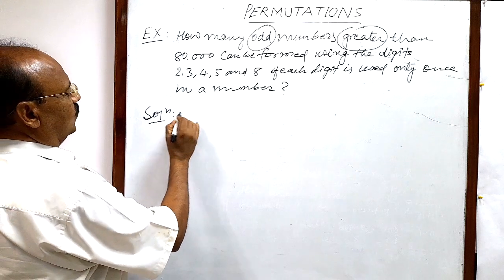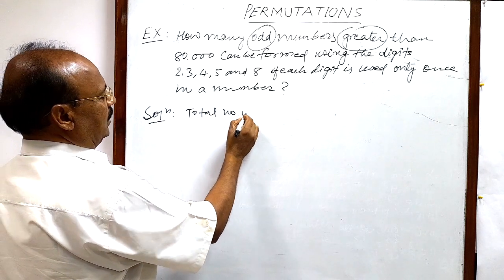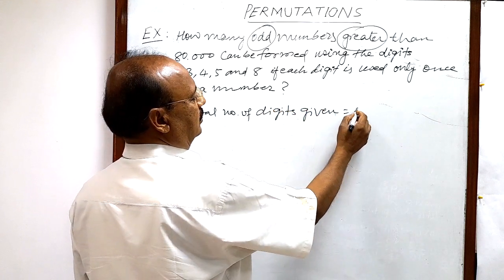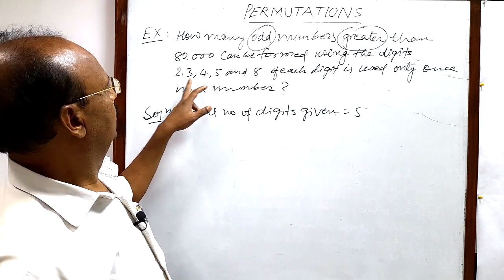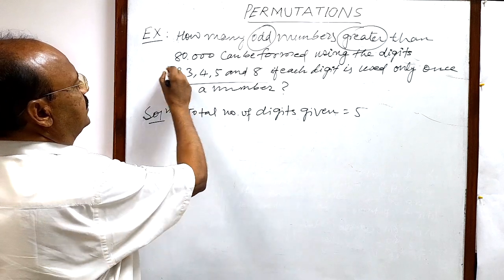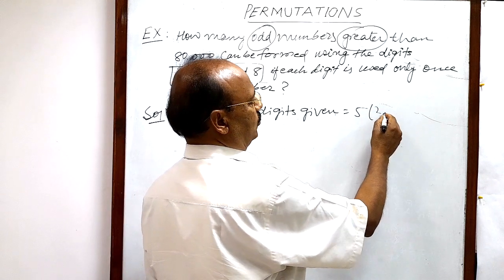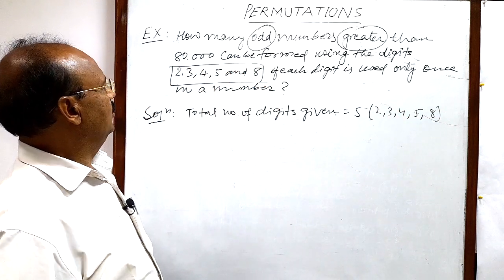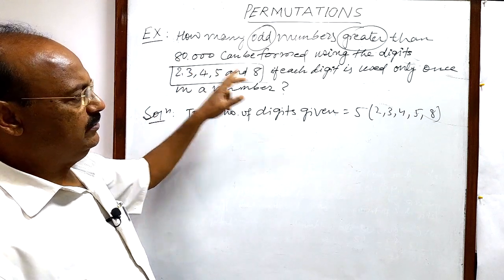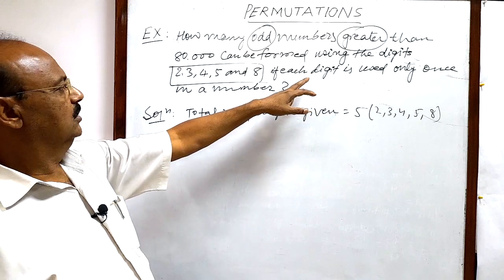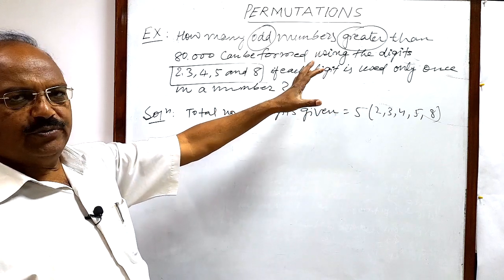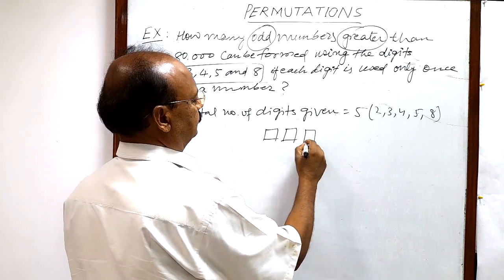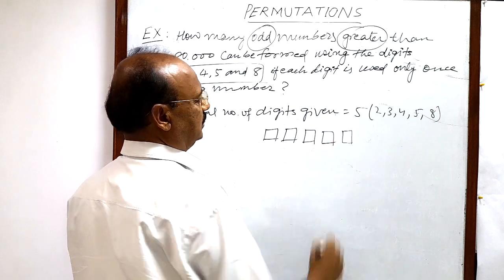So total number of digits given: 5 digits. These are 2, 3, 4, 5, and 8. We can write here also 2, 3, 4, 5, and 8. And numbers should be greater than 80,000. 5 digits are available. Each digit has to be used only once. No digit will be repeated. It means we have to fill up these 5 places with the help of these 5 digits.